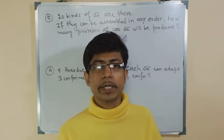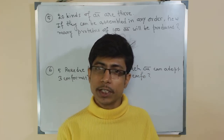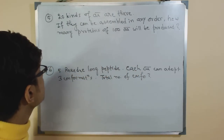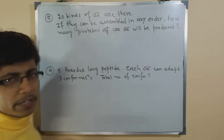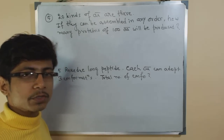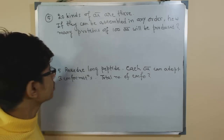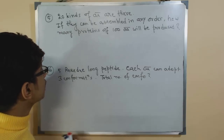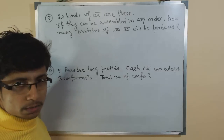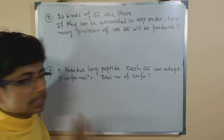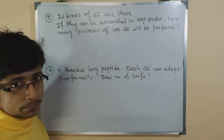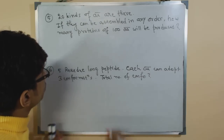Welcome back guys — biology and mathematics. We are trying to establish a relation here, and for that we have two questions. The first one is very simple, depends on simple law of probability and use of your brain — nothing else, no calculations. There are 20 kinds of amino acids, and if they can be assembled in any order, how many proteins of 100 amino acids will be produced?